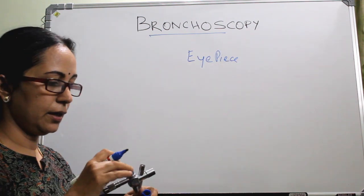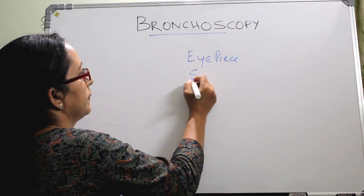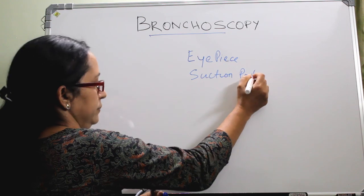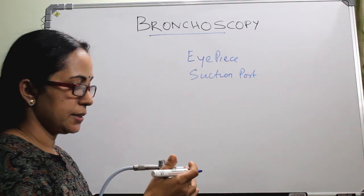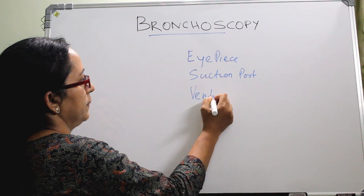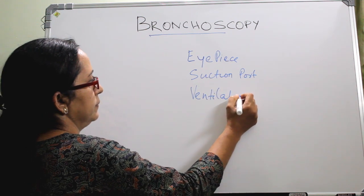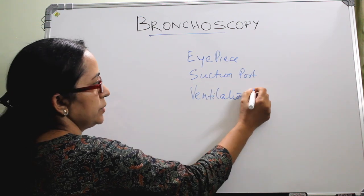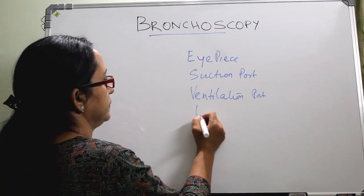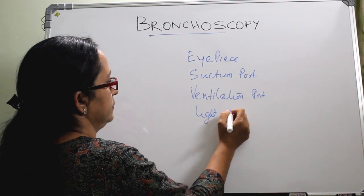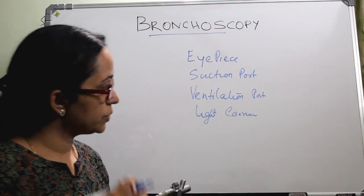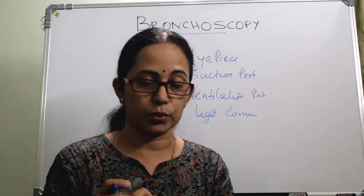The parts are: eyepiece, suction port, a ventilation port to connect to anaesthesia, and a light carrier or light source. These are the parts of a rigid bronchoscope.